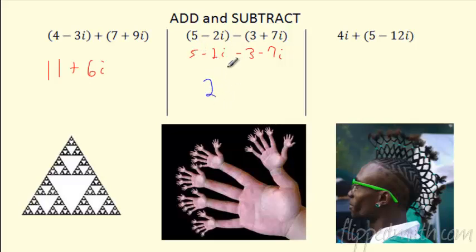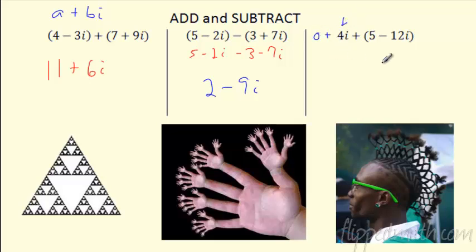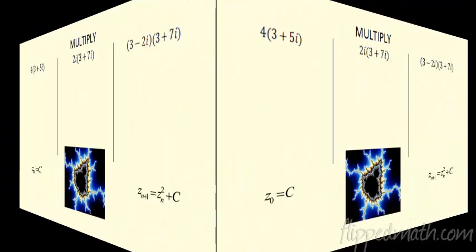Once you do that, no problem with the signs — it's the same thing as adding. You say 5 minus 3 is 2, and then negative 2i minus 7i is negative 9i. So we're getting these complex points again — the real part plus the imaginary part. If it's all imaginary, you could write the real part as 0 plus 4i, just add them. 0 plus 5 is 5, and 4i minus 12i is minus 8i. Just add the imaginary to the imaginary part — it's like combining like terms.